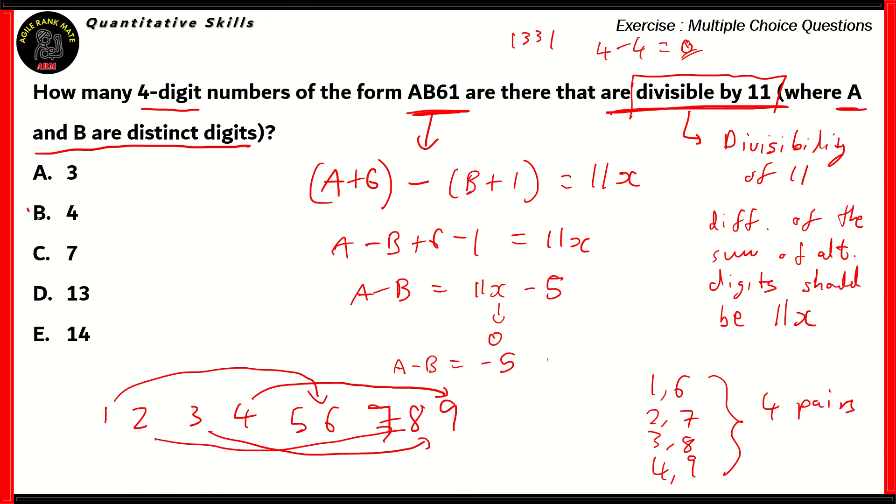Therefore, option B, 4, turns out to be the right option. You can verify this by checking out the pairs. You can put 1661, 2761, 3861, and 4961. That's how we solve for this particular question. Here we're looking for the divisibility test for 11, we apply that with the form of the number that's given, and then we find out the relation between A and B among the 9 digits to find the correct pairs. If we have 4 correct pairs, then there are 4 distinct 4-digit numbers of the form AB61 which are divisible by 11.